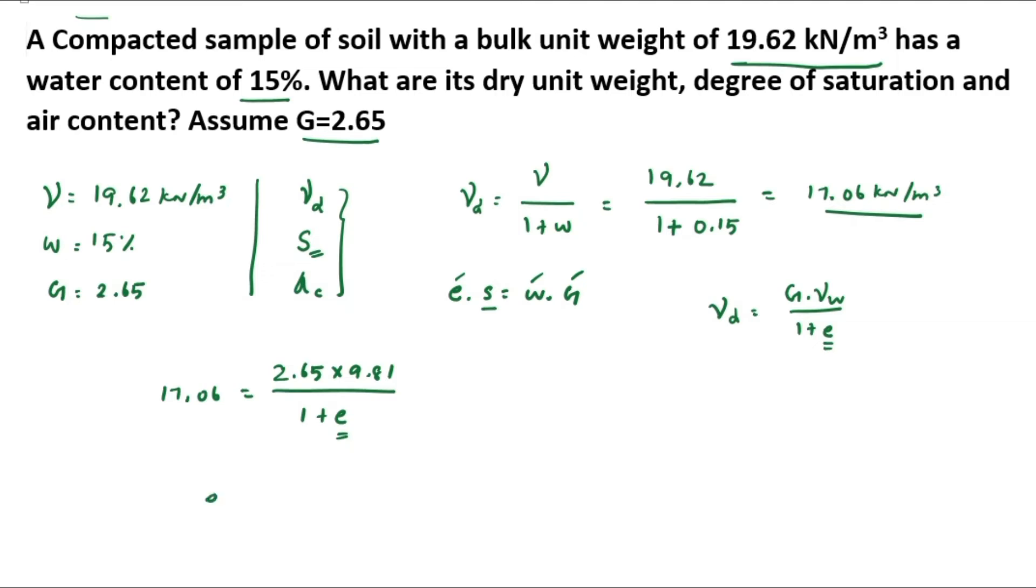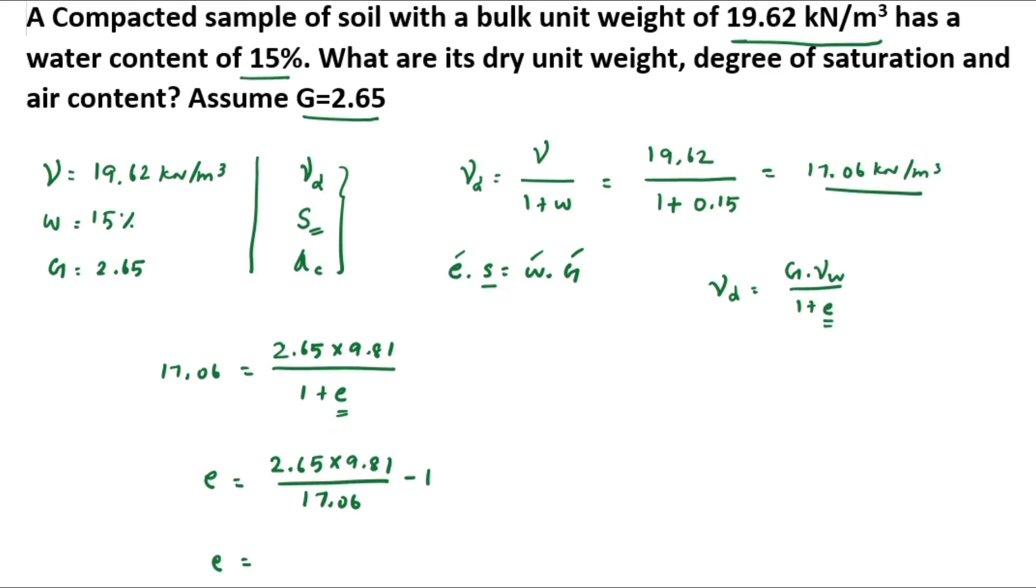E equals 2.65 times 9.81 divided by 17.06 minus 1. We get the value of E equal to 0.5238. Now we can substitute the E value to get the S value.